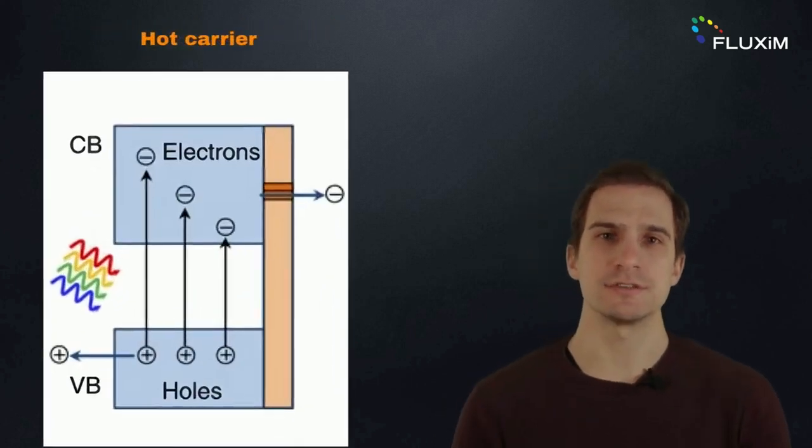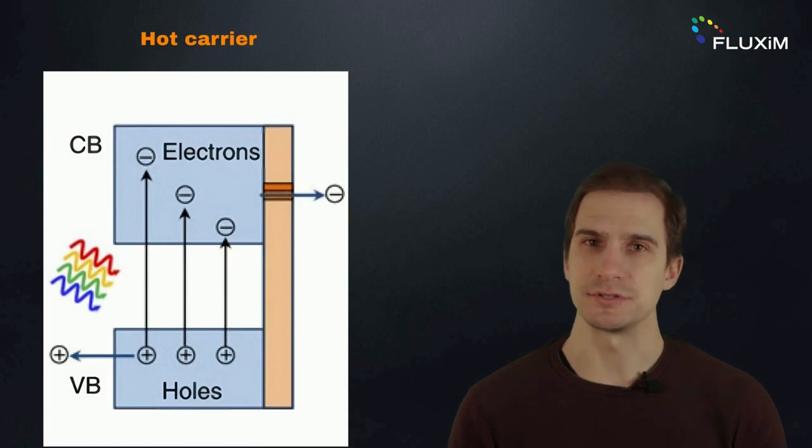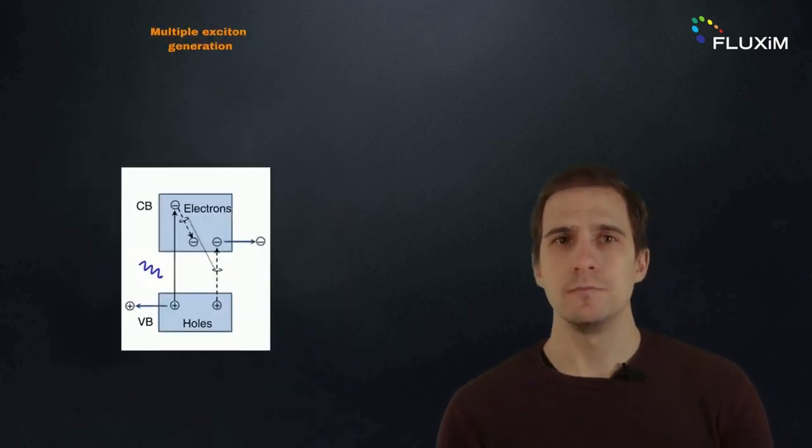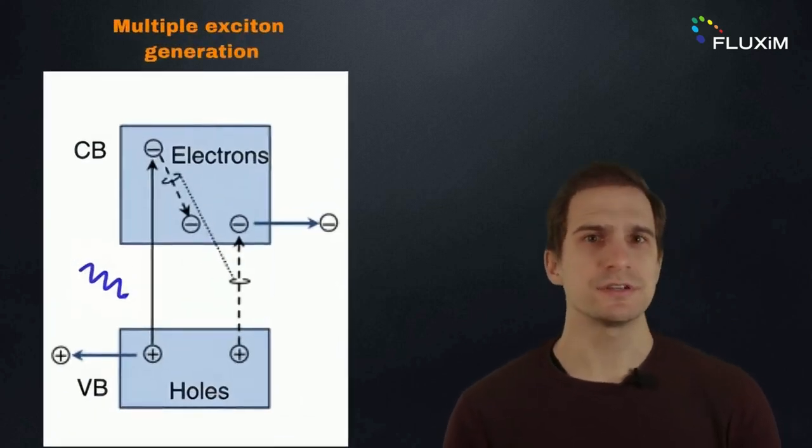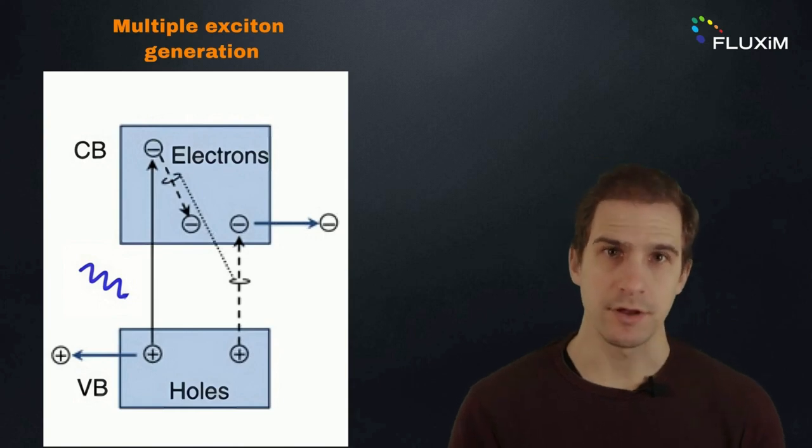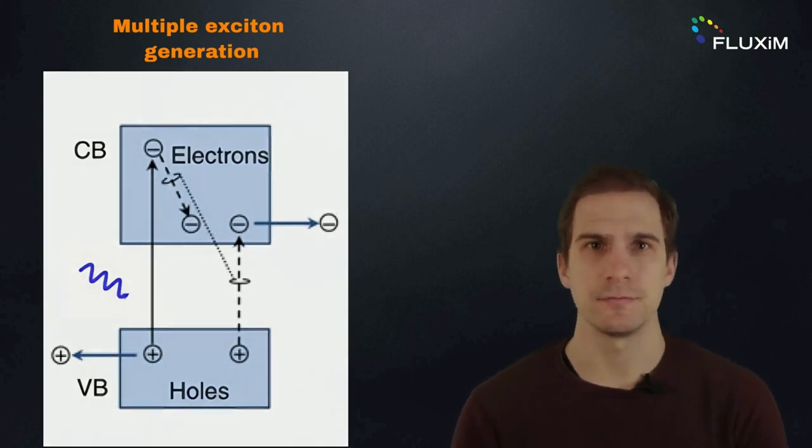Hot carrier solar cells extract high energy charge carriers before the excess energy turns into heat. Multiple exciton generation solar cells create more than one charge carrier from a single high energy photon. We will focus on multi-junction solar cells in this video since they are commercially available and can surpass the Shockley-Queisser efficiency limit.